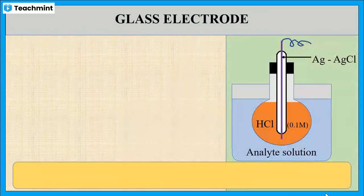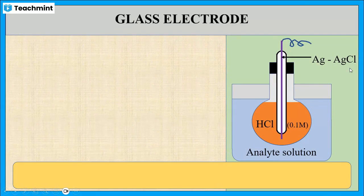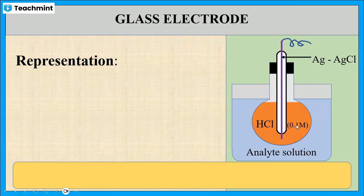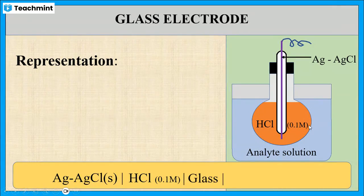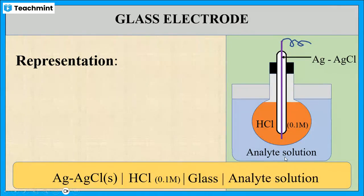Now let us see the representation of the glass electrode. The glass electrode mainly contains a silver-silver chloride wire which is in contact with the HCl of known concentration, which is in contact with the glass bulb, which is in contact with the analyte solution. So this is the representation of the glass electrode.